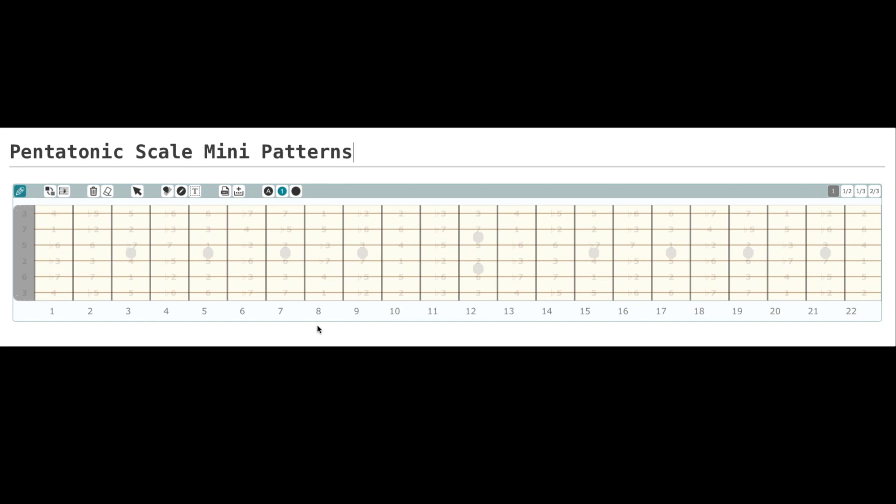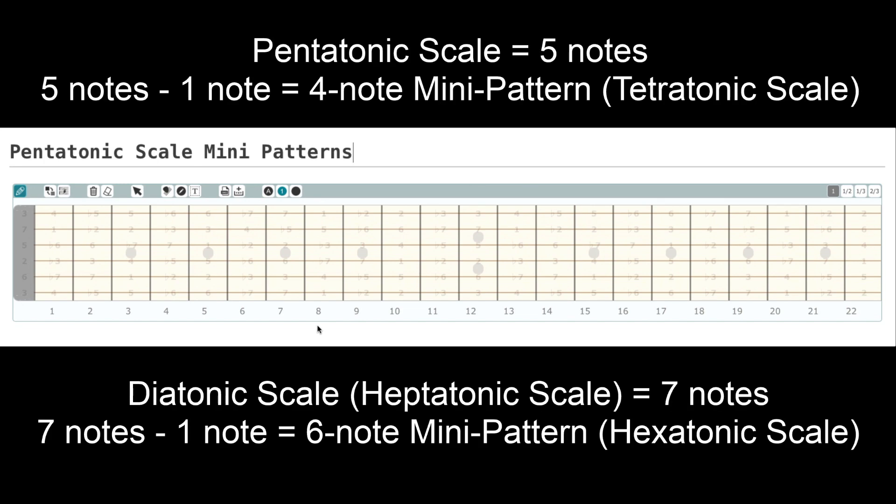So to begin, there are five mini patterns in the pentatonic scale. There will be seven mini patterns in the diatonic scale. It makes sense. It relates to how many notes there are in the scale. In a mini pattern, there is always one less note than there is in the entirety of the scale. So for example, if a pentatonic scale has five notes, there will be four notes per mini pattern. If a diatonic scale has seven notes, there will be six notes per mini pattern.